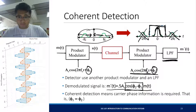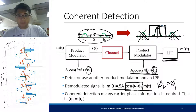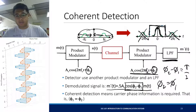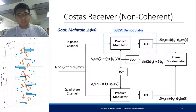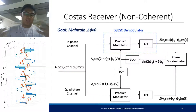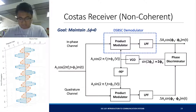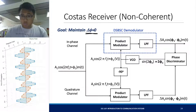Coherent detection is achieved if phi2 is equal to phi1. You won't be able to receive the message signal if the phase difference is equal to pi over 2, because cosine of pi over 2 is 0 — meaning you won't be able to recover any message. That's why it's important to use a coherent detector. We use the Costas receiver to do that. As you can see, it's more complicated than an envelope detector. The Costas receiver's goal is to maintain a phase difference between the two carriers as 0.